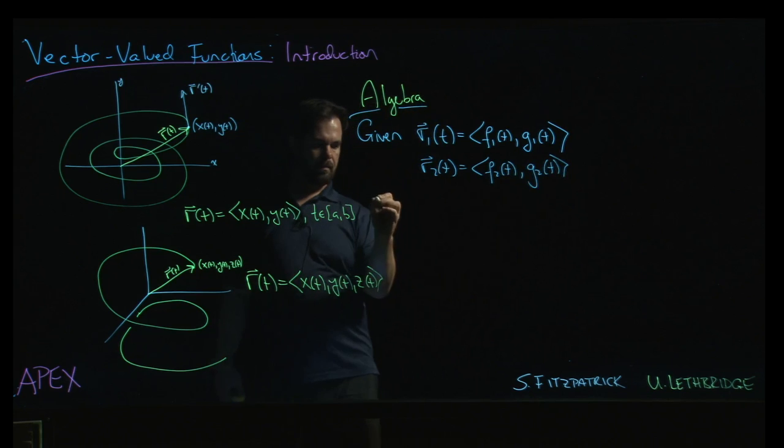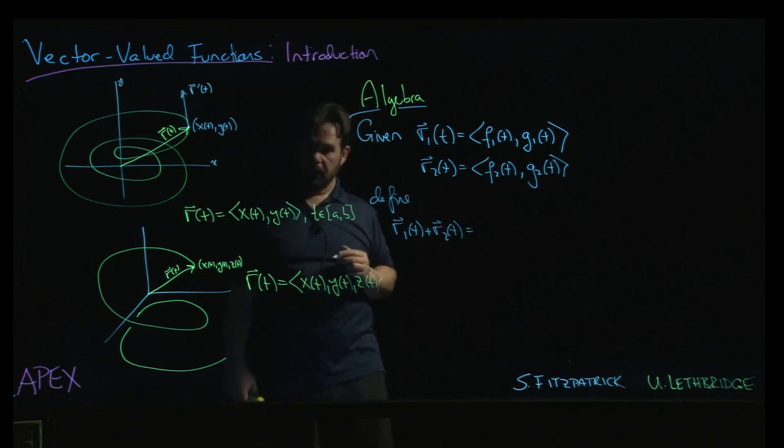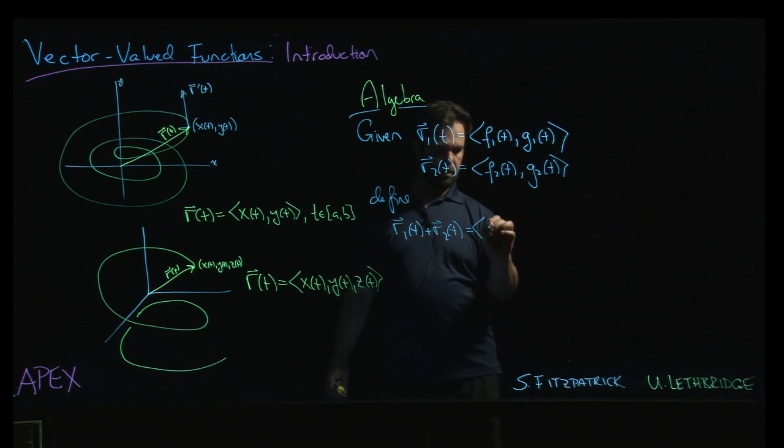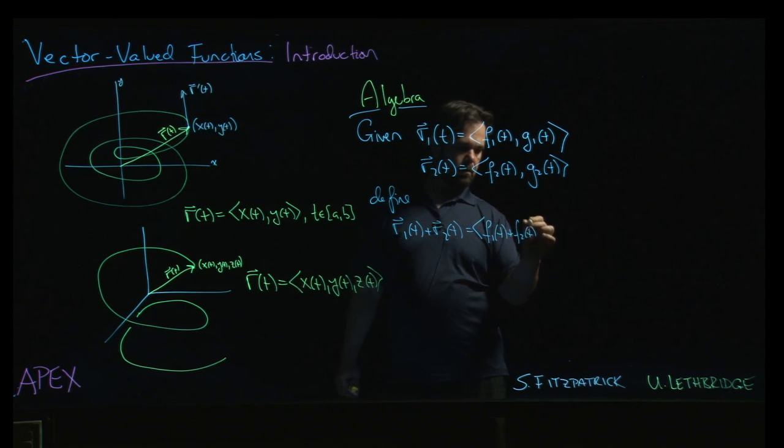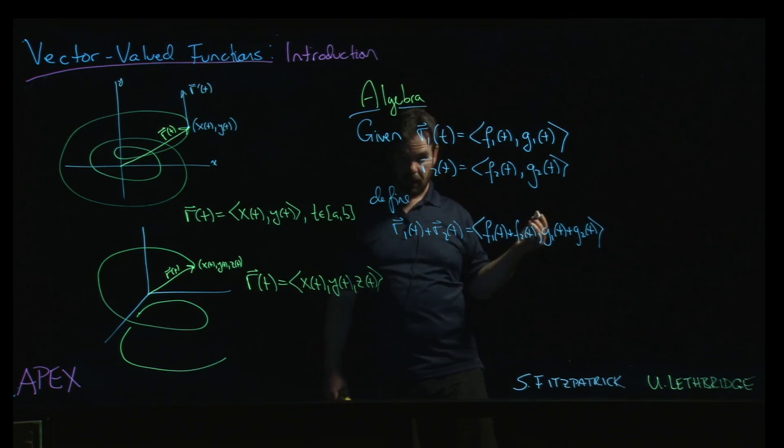So we can define the sum r1 plus r2, and it's exactly what you expect. You evaluate the two functions, and then you add the corresponding vectors. So it's going to be f1 plus f2, oops, not done with the vector yet, and then g1 plus g2. We just add the corresponding components.